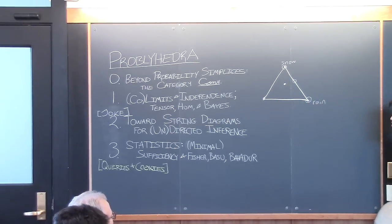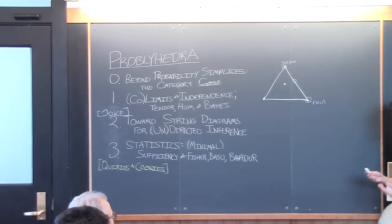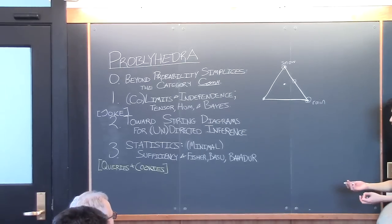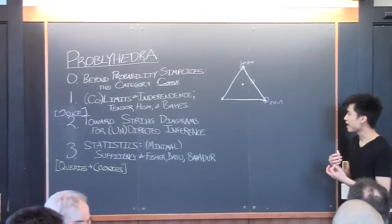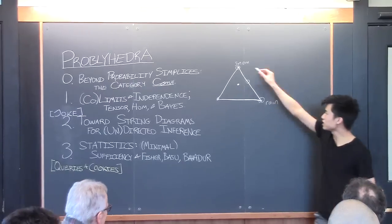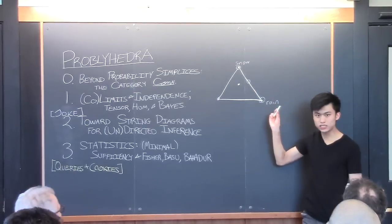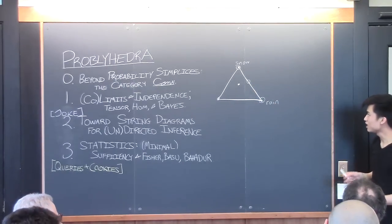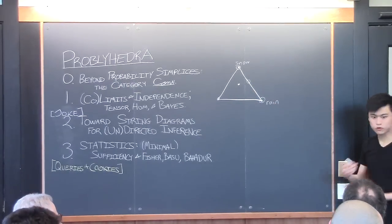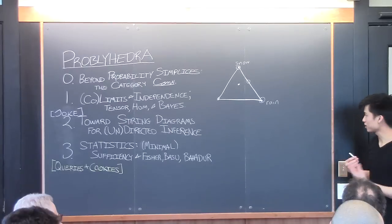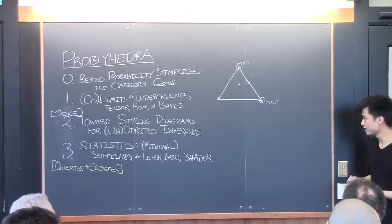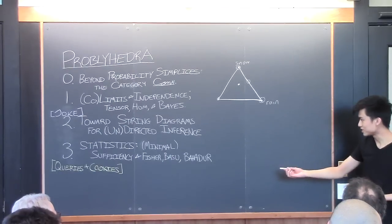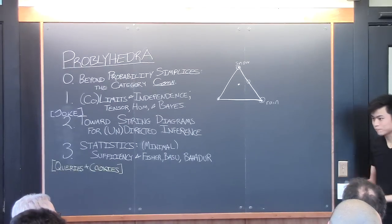Simplices are very nice, and we'll consider a category whose objects contain the simplices. But we'll see that if we add not only all the simplices, but all the convex algebras, or convex sets, as I'll call them, that gives us a bit more elbow room to model things like independence, sufficient statistics, complete statistics, and so forth.